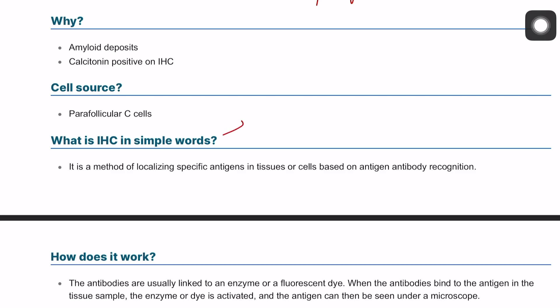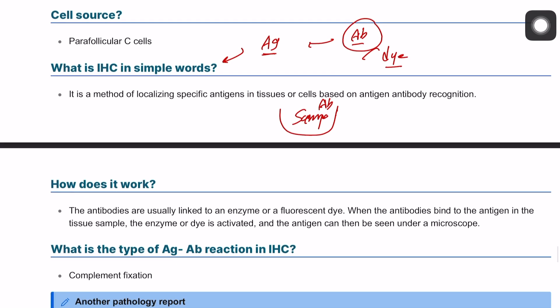Immunohistochemistry is a way to identify certain antigens in cancerous cells via an antigen-antibody reaction. Basically, we have certain antibodies and we attach them to a dye that is able to stain when it attaches to a certain antigen. We take the tissue sample from the patient and combine it with the antibody.